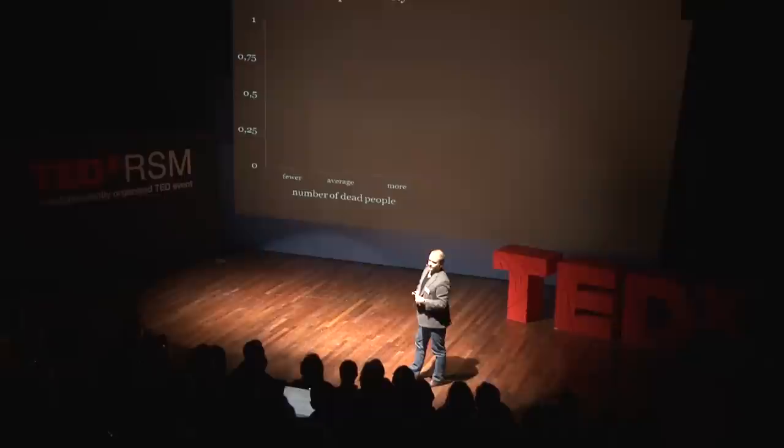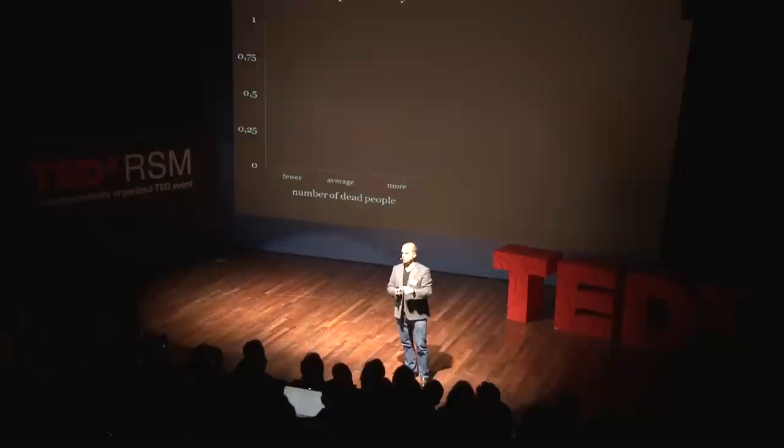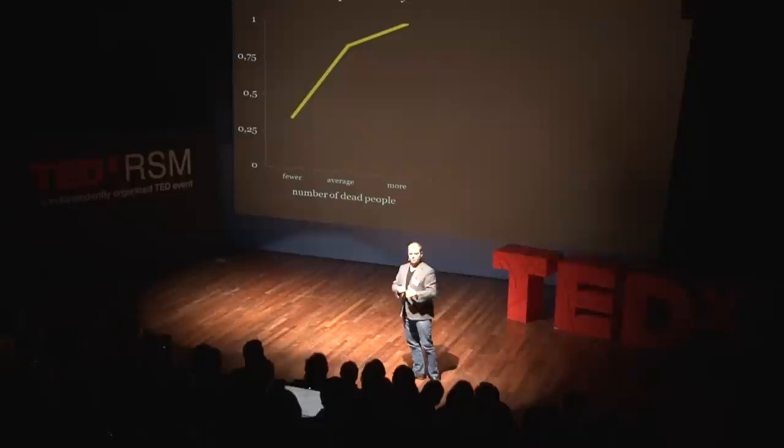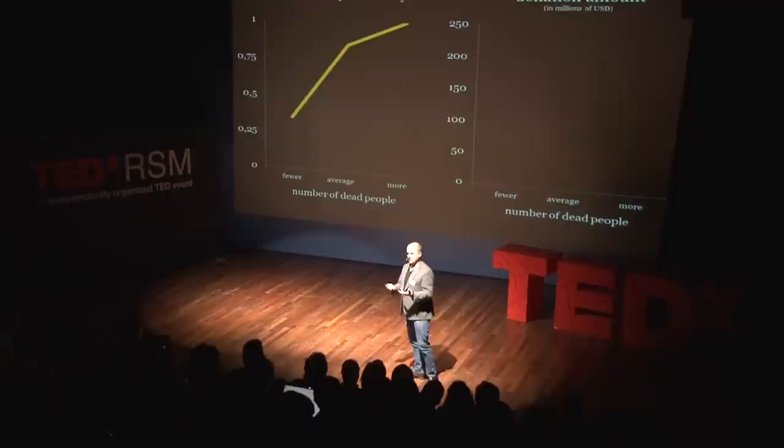We looked at two things: donation probability — the chance that you would donate to a disaster relief fund — and donation amount, as a function of how many people were actually killed in a natural disaster. What we found was: when more people are killed in a natural disaster, people donate more. If you look at donation amount as a function of how many people were killed, we also found that people are willing to contribute larger sums of money when more people die. Our statistical analysis indicated around 7,000 euro is donated for each additional person killed in a natural disaster.